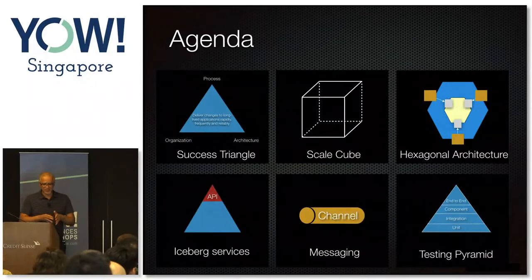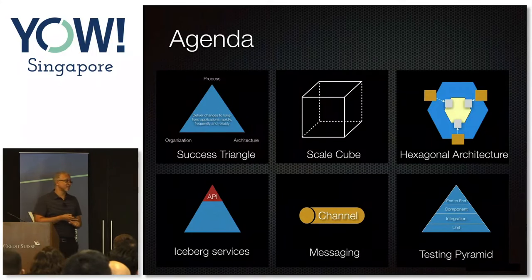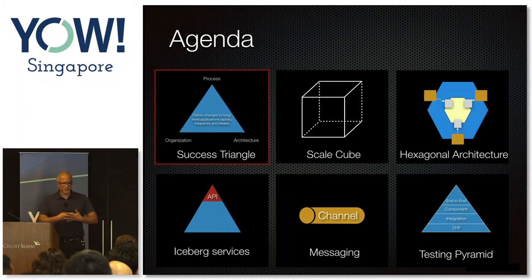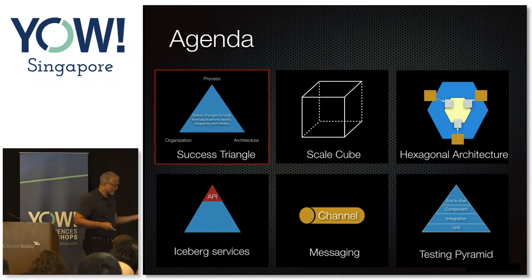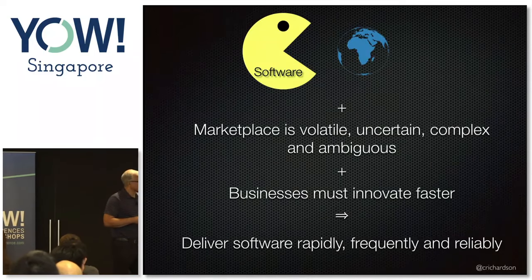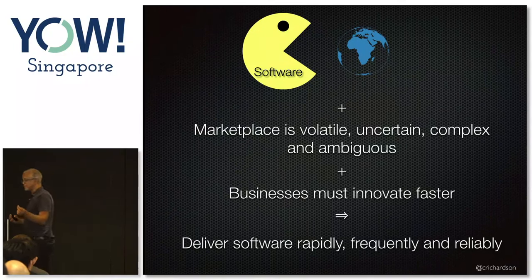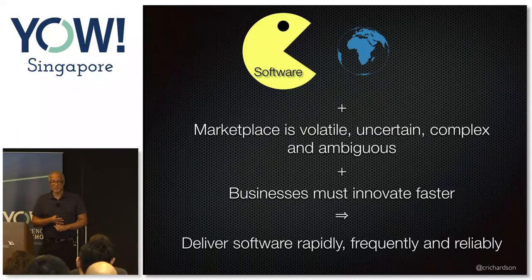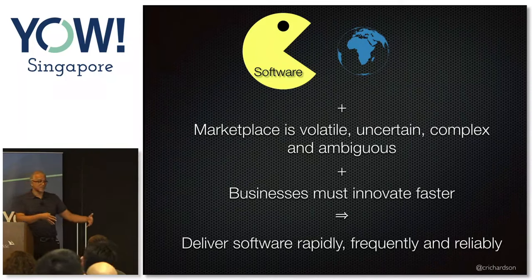Back to the talk. As I mentioned, a series of visual metaphors: success triangle, scale cube, hexagonal architecture, and so on. I'm going to start with the success triangle, which I view as the three factors you need to deliver software successfully in this modern age. If I was to sum up a huge motivation for change, it's really on this slide: software is eating the world, which basically means that every company has to master the ability to deliver software.